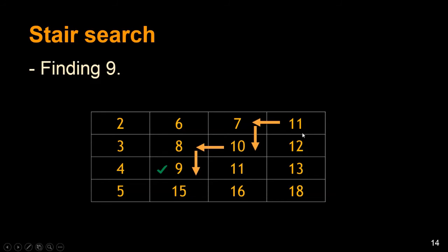Because in the worst case, you would traverse the whole row and the whole column. Only one stair. So the traversal we have looks like stairs, right? So we call it stair search.